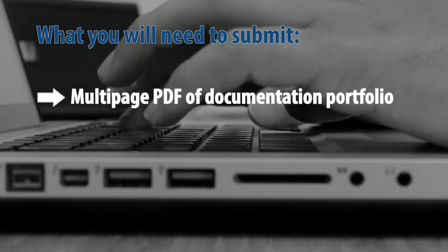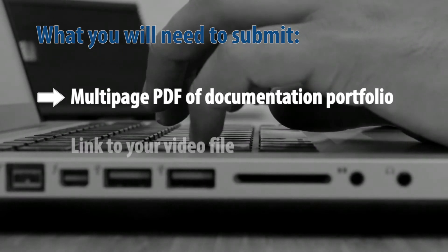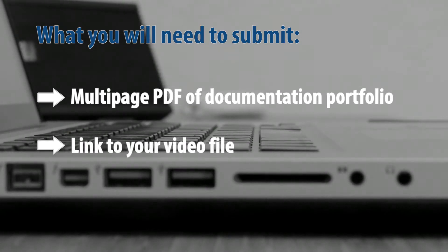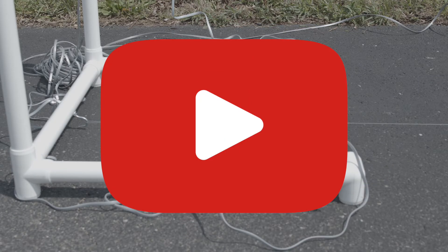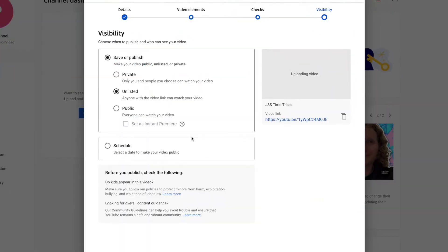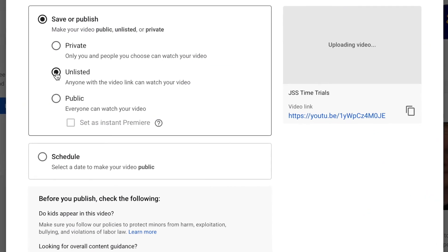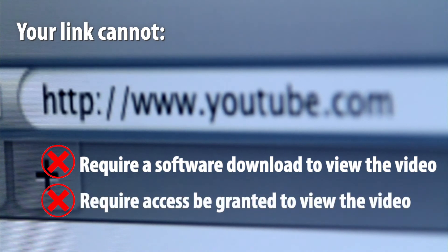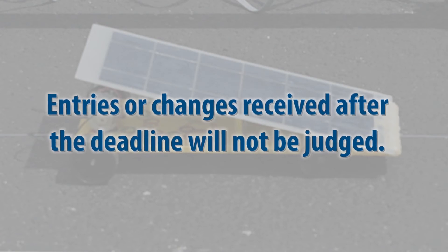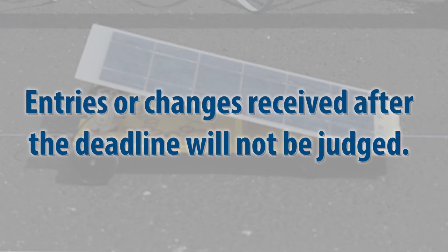Here is how to submit your race video. Participants will submit a multi-page PDF of the documentation portfolio and a hyperlink of the video demonstration to the designated submission file. Participants may choose any video hosting site, such as an unlisted YouTube URL, as long as the video is located online and accessible for evaluation. If a URL link is provided, the URL must point directly to the participant's entry. Entries that require software download or request that access be granted will not be judged. Entries received or changes made to submitted entries after the deadline will not be judged.